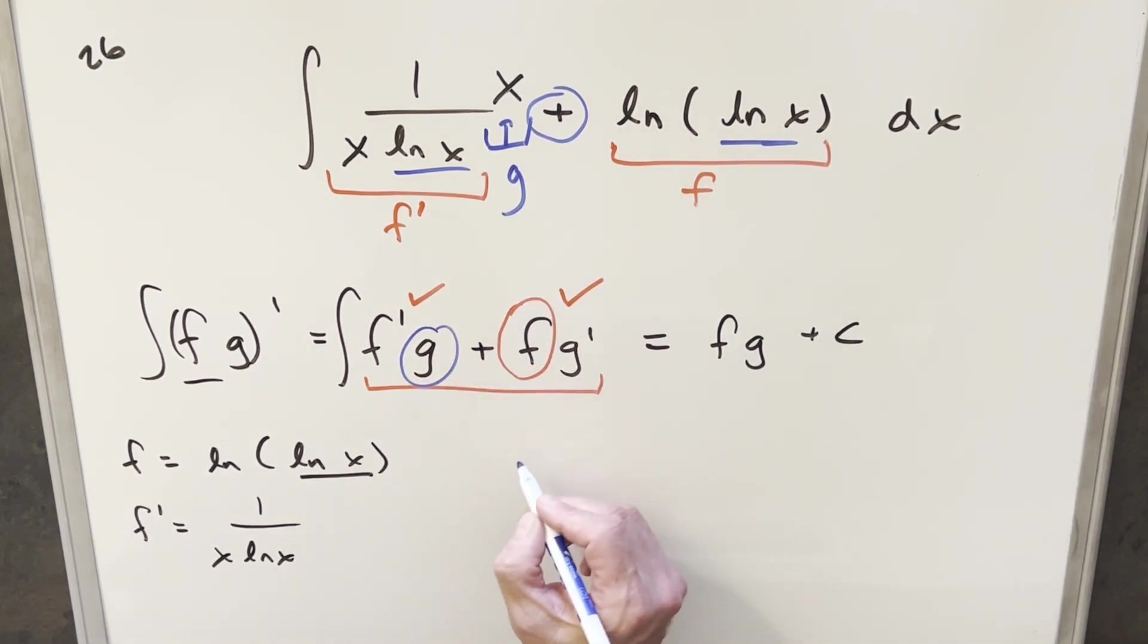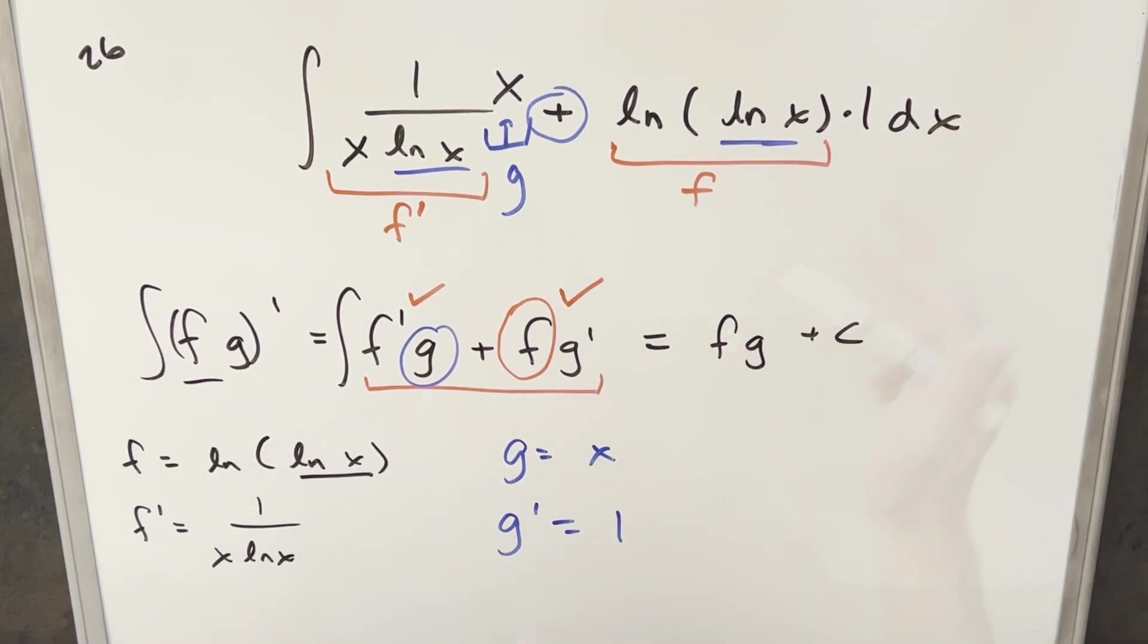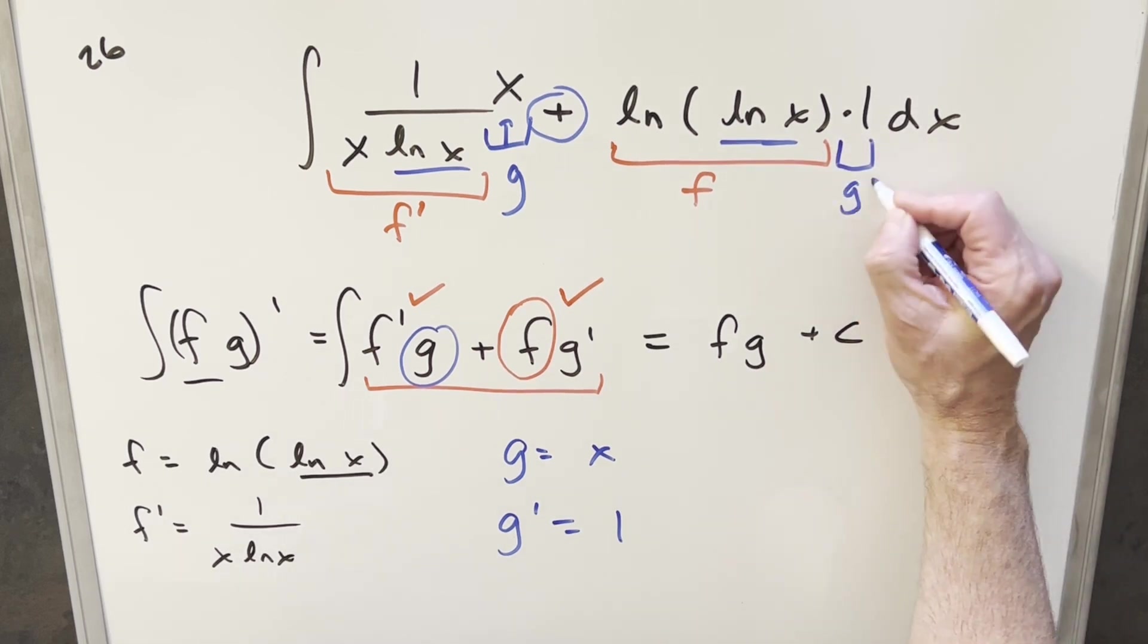So let's make that assumption and see how that works. If g is x, then we take a derivative really quick. The derivative of x is going to be just 1. It's really easy to create a 1 right here because that's not going to change the problem at all. We'll just create a 1 right there, and then now we have our g prime.